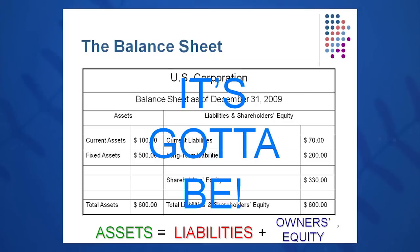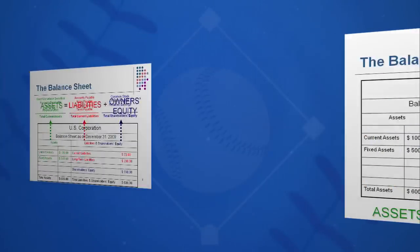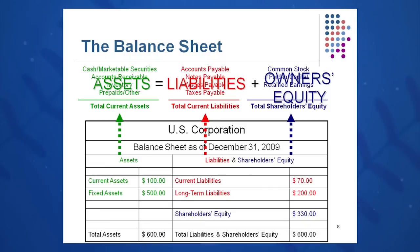The balance sheet includes assets, liabilities, and owner's equity, and it must balance before you leave work that day. On the left side, assets are listed in order of decreasing liquidity: cash is listed first, then accounts receivable, then inventory, then prepaid expenses and other items. These are your total current assets — items expected to be turned into cash within one year.